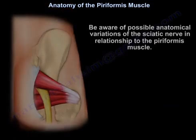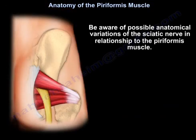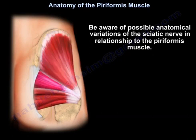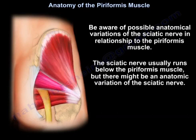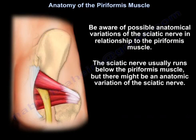Be aware of possible anatomical variations of the sciatic nerve in relationship to the Piriformis Muscle. The sciatic nerve usually runs below the Piriformis Muscle, but there may be anatomical variations of the sciatic nerve.